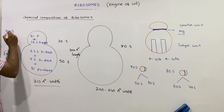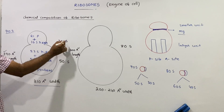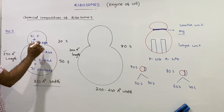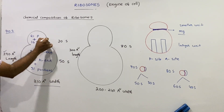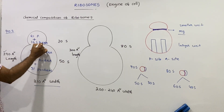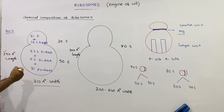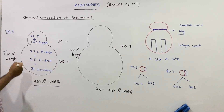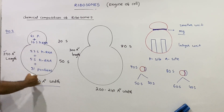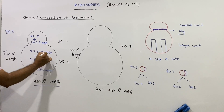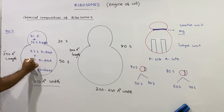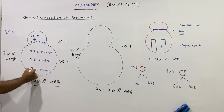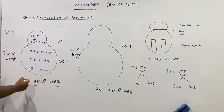To summarize 70S: the smaller unit is 30S, larger unit is 50S. The 30S unit has 21 proteins plus 16S rRNA. The 50S unit has 23S rRNA, plus 5S rRNA, plus 31 proteins.